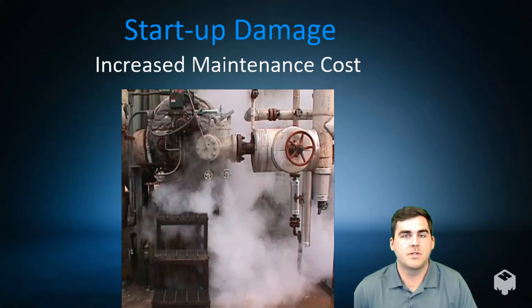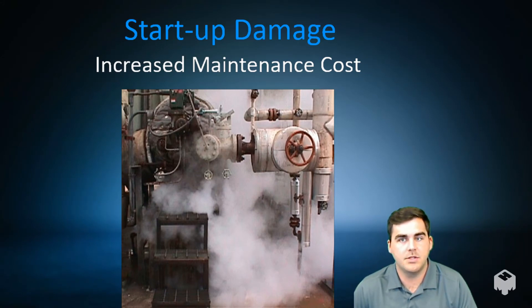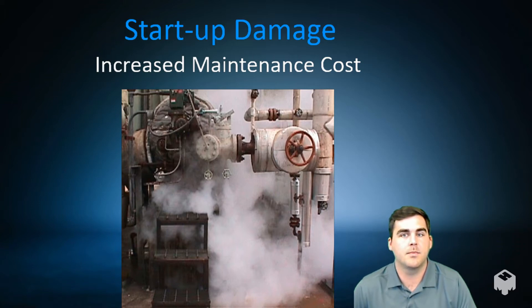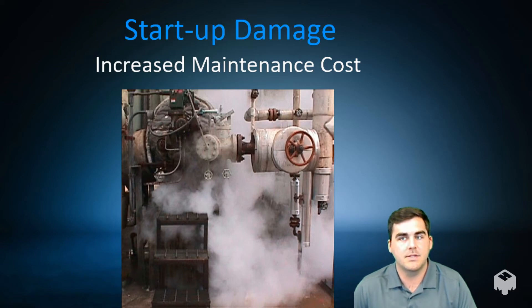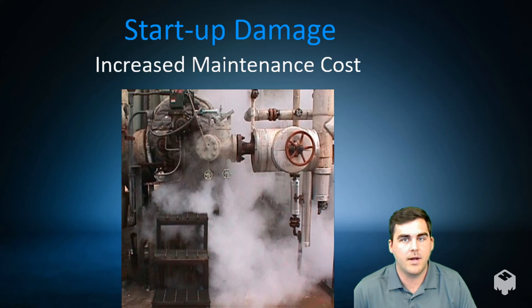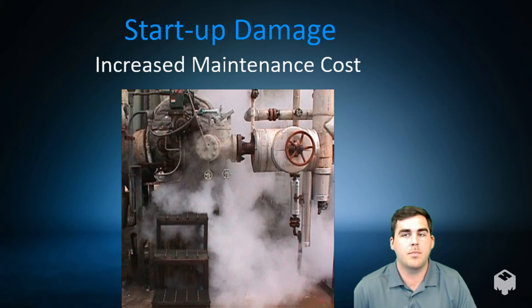Startup damage is often a result of insufficient condensate drainage upstream of your turbine, leading to high volumes of condensate entering your turbine during startup. Or maybe it wasn't the condensate from upstream of the turbine, but stagnant condensate that was able to collect in the low points of the turbine. This can all be mitigated by proper trapping.